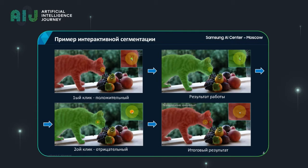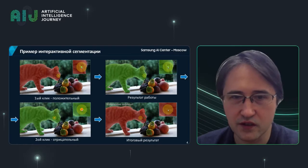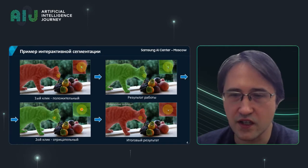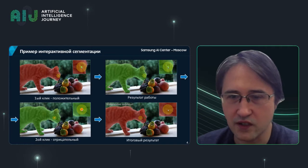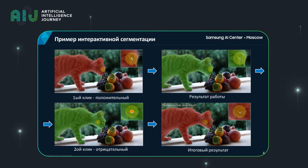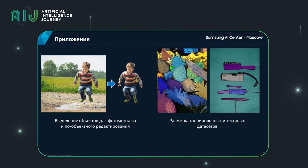The negative click shows that this area of the image does not belong to that desired instance. For example, if we want to select a cat's eye to change the color, the user would click the eye in the image. The algorithm doesn't know yet what the user wants — be that an eye or the cat as a whole — so it would select the whole object. After that, the user would make a negative click on the cat's head to show that he wants only the eye selected.